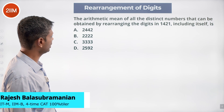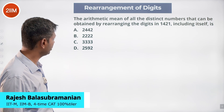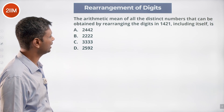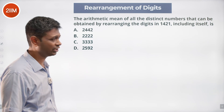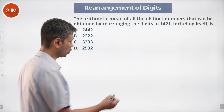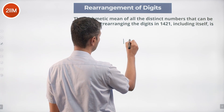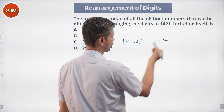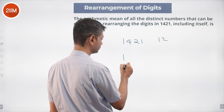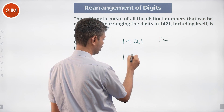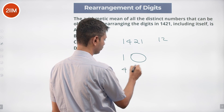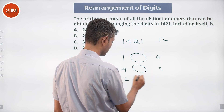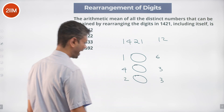Find the mean of all distinct numbers that can be obtained by rearranging the digits in 1421, including itself. It's a nice question. How many rearrangements do we have? 4 factorial divided by 2 gives 12 rearrangements. Starting with 1, there are 6 rearrangements; starting with 4, there are 6; and 3 and 3 for the remaining digits.